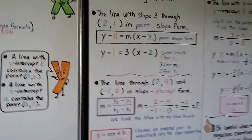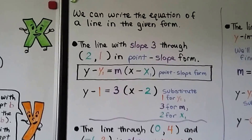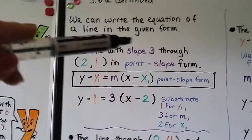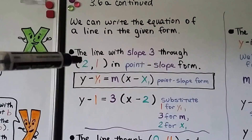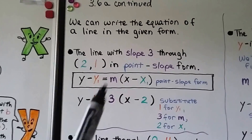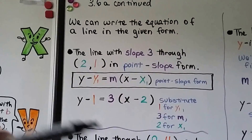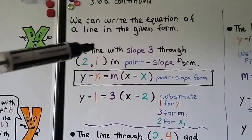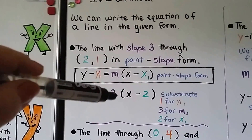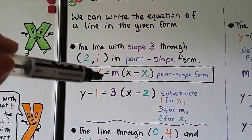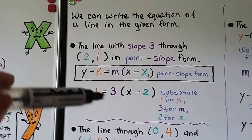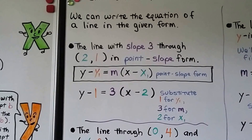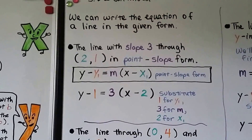We can write the equation of a line in point-slope form. The line with slope 3 through the point (2, 1) — we just substitute these values in. We know slope is 3, y sub 1 is 1, and x sub 1 is 2. We substitute the values into point-slope form.